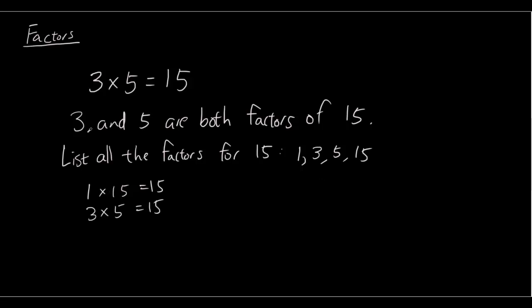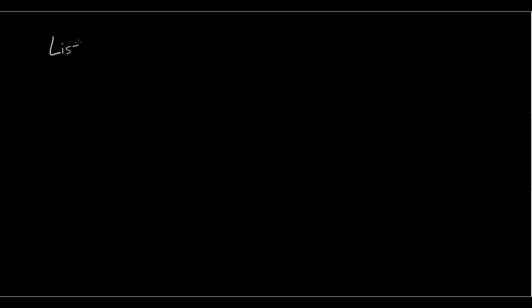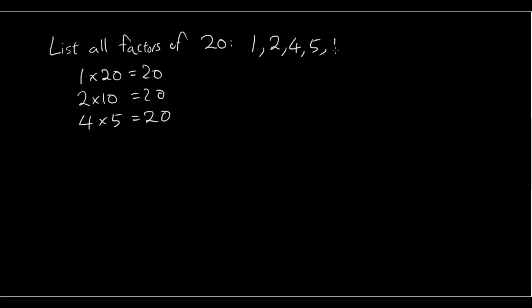Okay, let's do another one. List all the factors of 20. So we have 1 times 20 is 20. 2 times 10 is 20. 3 doesn't go into 20. 4 times 5 is 20. And that's it. You can't think of anything else. So therefore the factors are 1, 2, 4, 5, 10, 20.